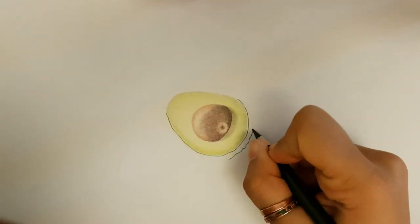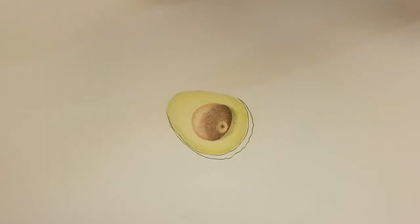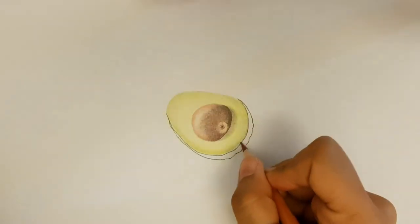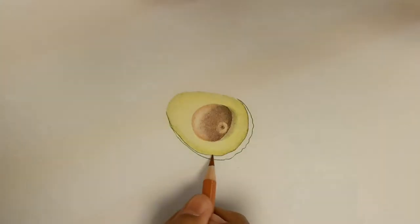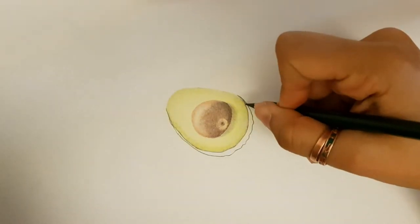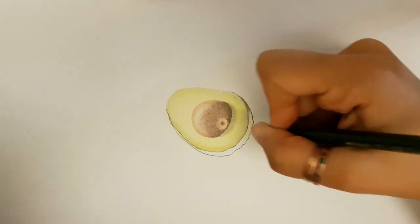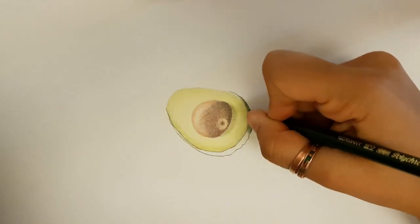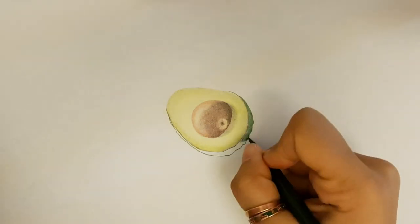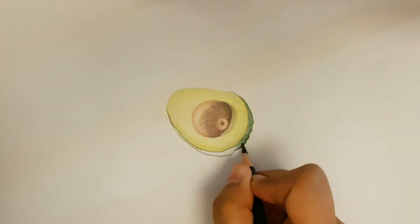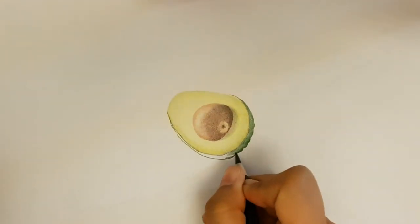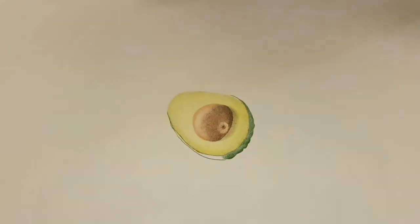For the actual skin of the avocado, I'm using the pine green and I'm mixing some colors from burnt ochre or the dark cadmium yellow, and also a little bit of grey to show it more realistic.